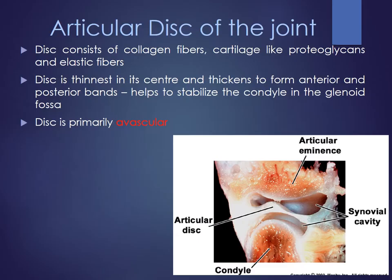The articular disc of the joint is again very unique. It consists of collagen fibers, cartilage-like proteoglycans and elastin fibers. The disc is thinnest in its center and thickens to form anterior and posterior bands. It helps to stabilize the condyle in the glenoid fossa. The disc itself is primarily avascular — it doesn't have its own blood supply, but the edges, muscles and ligaments provide blood supply to the entire TMJ. The synovial cavity between the condyle and the articular eminence is filled with synovial fluid.